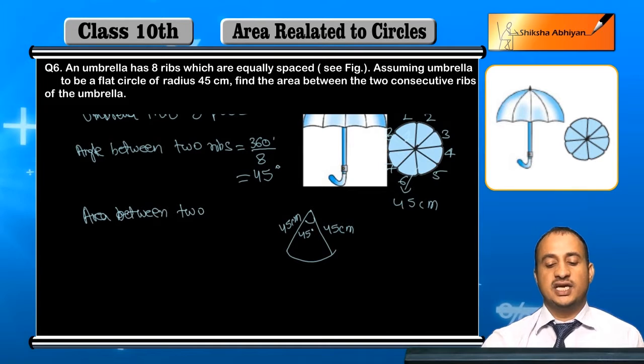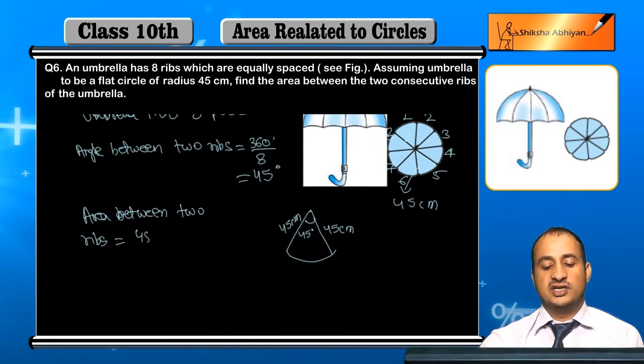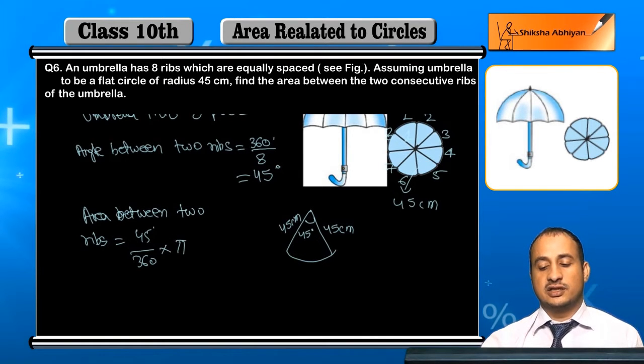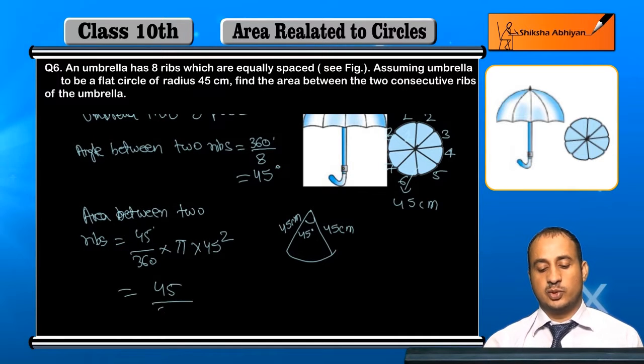This will be 45 by 360 into pi r squared. Here r is 45 cm. Then further calculate: 45 into 22 by 7 into 45 into 45.